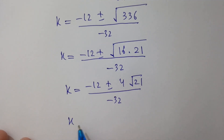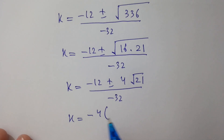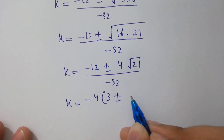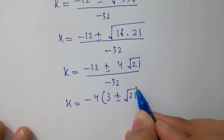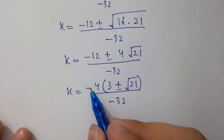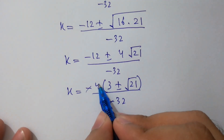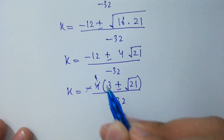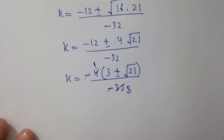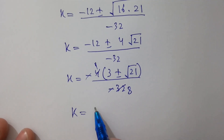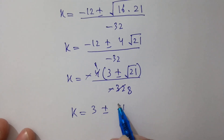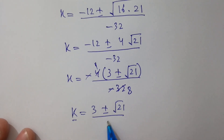Here minus 4 is common. So 4 times 3 is 12, and 4 times 8 is 32, and the negatives cancel. We get k equal to 3 plus or minus square root of 21, over 8.